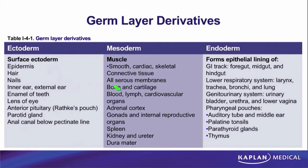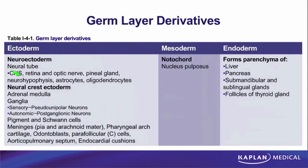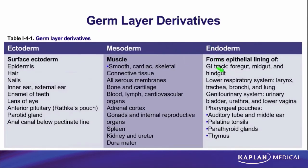Looking at this chart, we see it divided into three columns representing the three layers. The upper layer is ectoderm — surface ectoderm, neuroectoderm, and neural crest ectoderm. In the middle layer we see mesoderm and notochord. In the lower layer we see endoderm. The chart lists many adult structures derived from those cell types. What we don't want to do right now is just memorize this chart — we will get to virtually everything on it when we cover those particular organs.